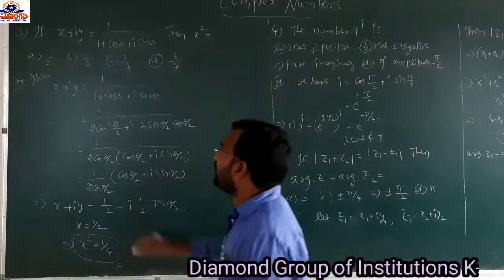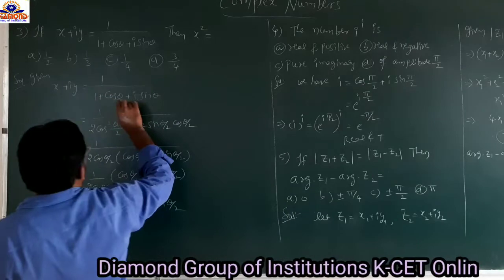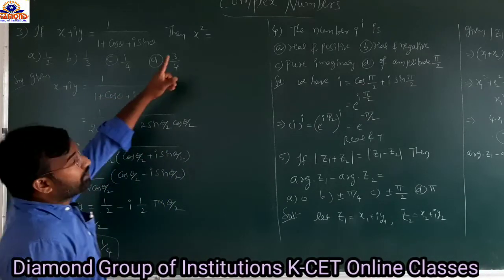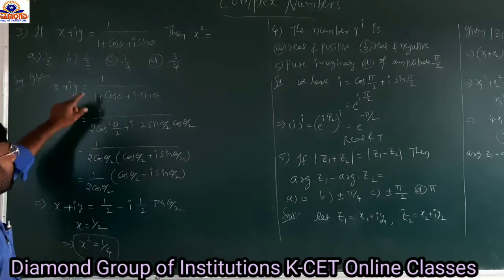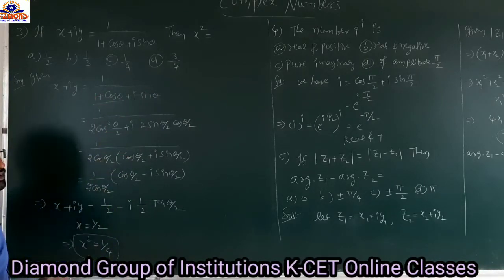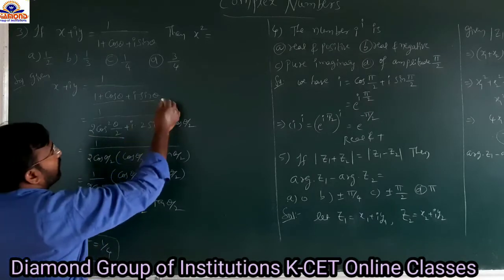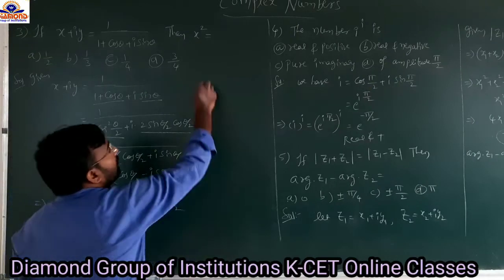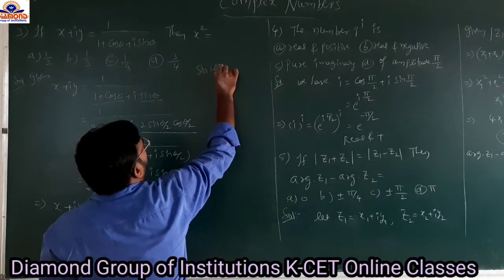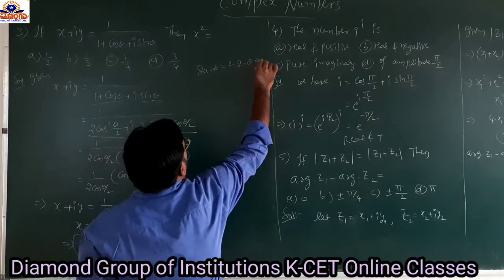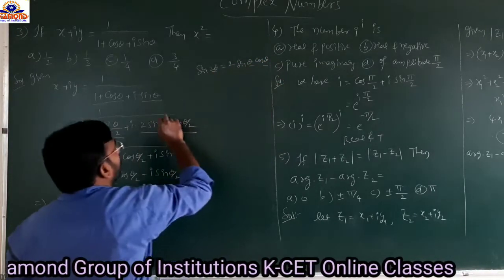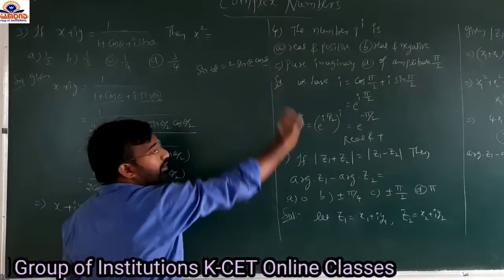The given condition is x plus iy equals 1/(1 plus cos θ plus i·sin θ). Now, 1 plus cos θ equals 2cos²(θ/2), and sin θ equals 2·sin(θ/2)·cos(θ/2), using the formula sin 2θ equals 2·sin θ·cos θ. So, substituting, we factor out 2cos(θ/2).